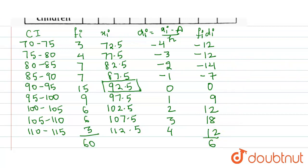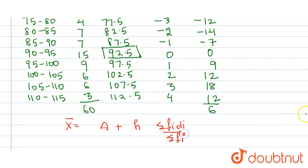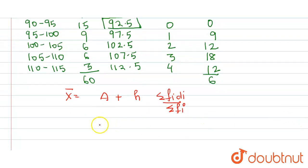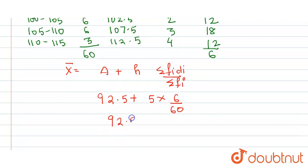Now let us calculate the value of the mean. The formula using the shortcut method is: mean = assumed mean + h × (Σfᵢdᵢ / Σfᵢ). Putting in values: 92.5 + 5 × (6 / 60) = 92.5 + 0.5 = 93. Therefore the value of mean is 93.